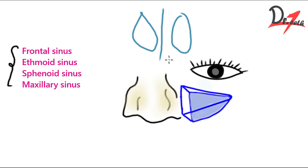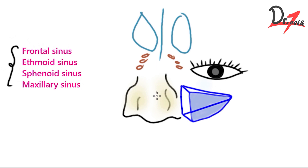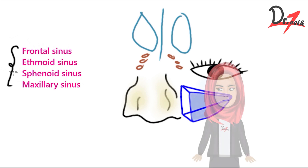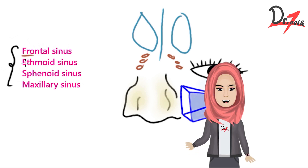Then we have the ethmoid sinus. The ethmoid sinuses are in between the two eyes — somewhere here. We have three of them: anterior, middle, and posterior. They are medial to the eyes. Then we have the maxillary sinus — one on each side, present lateral to the nose.